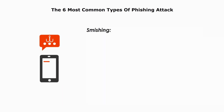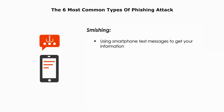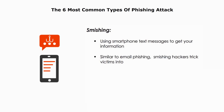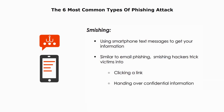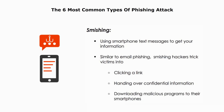Smishing attacks are when hackers use phone text messages to get your information. Similar to email phishing, smishing hackers trick victims into clicking a link, handing over confidential information to hackers, or downloading malicious programs to their smartphones.